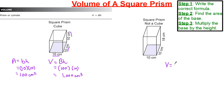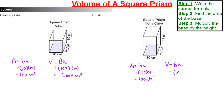Now let's do the same for the second square prism. The formula is capital B times height. The base is the area of the base, so area equals base times height: 10 multiplied by 10 gives us 100 centimeters squared. This time our height is 18, so 100 multiplied by 18 gives us a total value of 1,800 centimeters cubed.